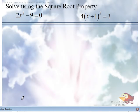Solve using the Square Root Property. 2x squared minus 9 equals 0. There are two steps.